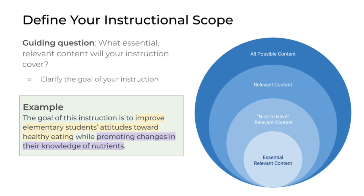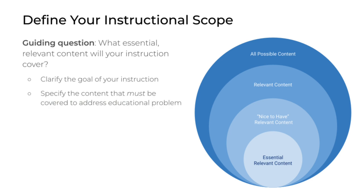Once you've clarified the goal of your instruction, you need to specify the content that must be covered to address your project's educational problem. If you look at the nested circles in the graphic shown here, you do this by specifying all of the possible content related to your instructional goal and topic, then drilling down to determine the most relevant content, and further distinguishing between nice-to-have relevant content versus essential relevant content. For your instructional scope, you're trying to get down to that core level of only dealing with your essential relevant content.